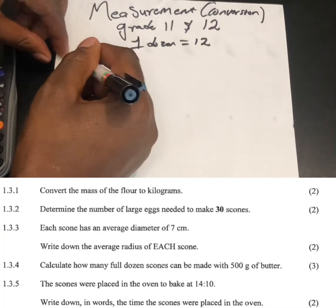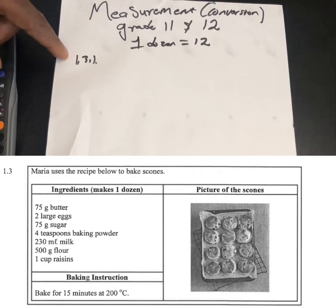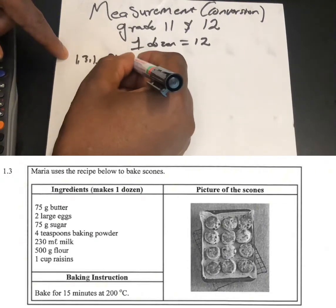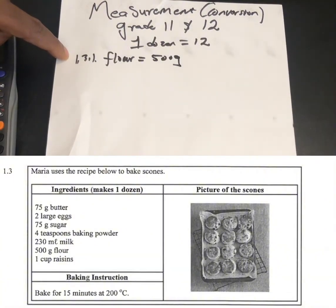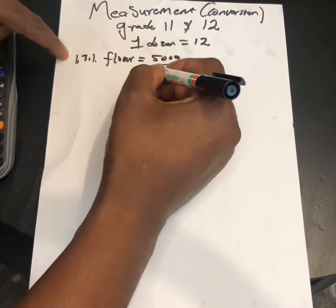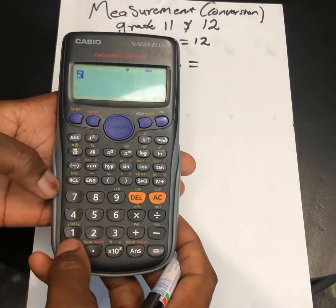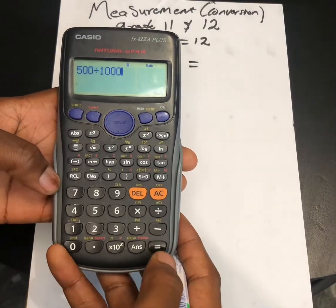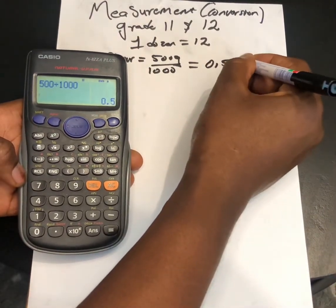Question 1.3.1 says convert the mass of the flour to kilogram. Going back to the ingredient, we find that our flour is 500 grams. To convert 500 grams to kilogram, we divide by 1000: 500 divided by 1000 equals one half, or 0.5 kg.